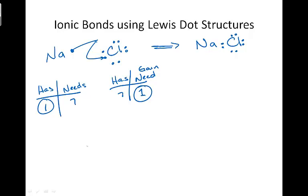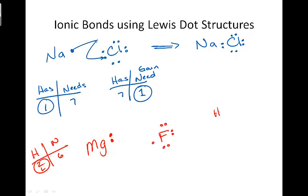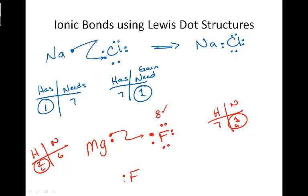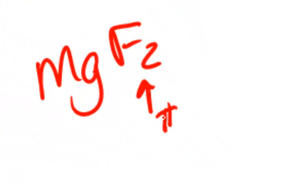Let's look at another example: magnesium, a Group 2 element, and fluorine, a Group 7 element. Magnesium has 2 valence electrons and needs 6, so it will lose its 2. Fluorine has 7 and needs 1, so it gains 1. Magnesium gives one electron to the first fluorine, but can't give a second electron because that fluorine is now full with 8. So a second fluorine atom — also with 7 valence electrons — accepts the second electron. This results in 2 fluorine atoms and 1 magnesium, giving us the chemical formula MgF₂. The 2 tells us the number of fluorine atoms in the compound.